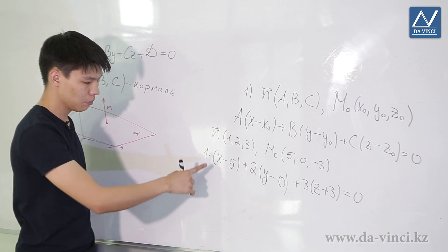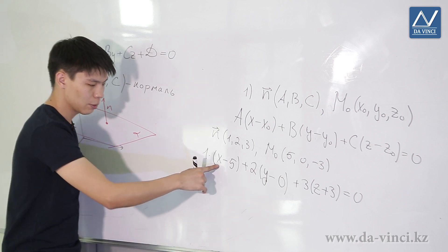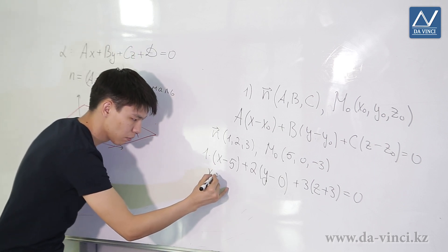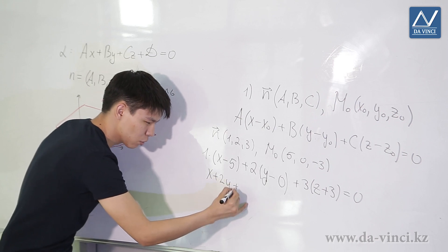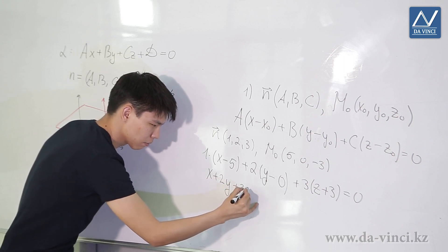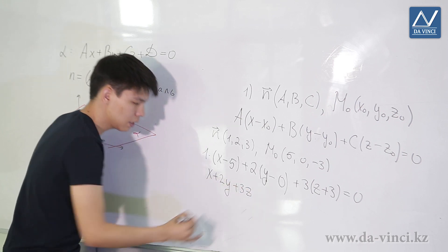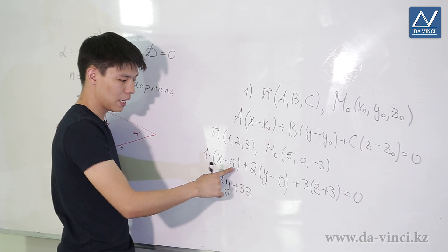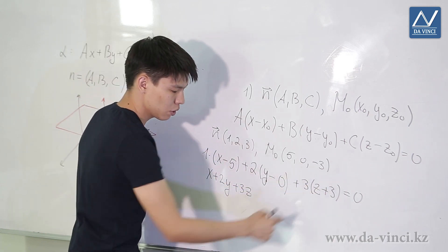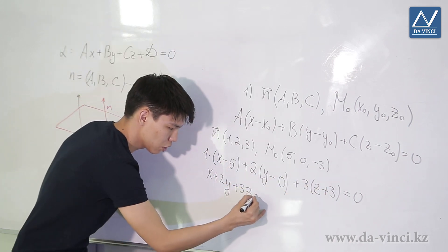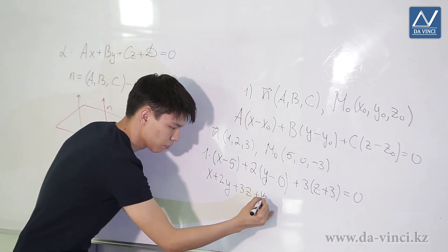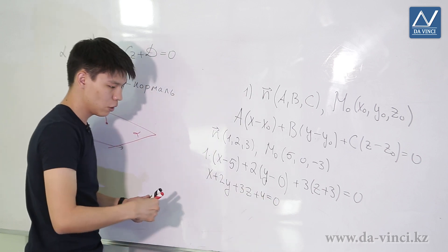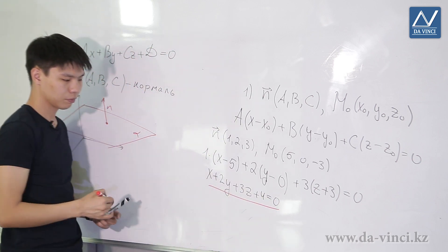Let's simplify it a bit by opening the brackets. We get x plus 2y plus 3z. Now let's calculate the numbers: minus 5, plus 0, plus 9, plus 4. We have drawn up the general equation of this plane.